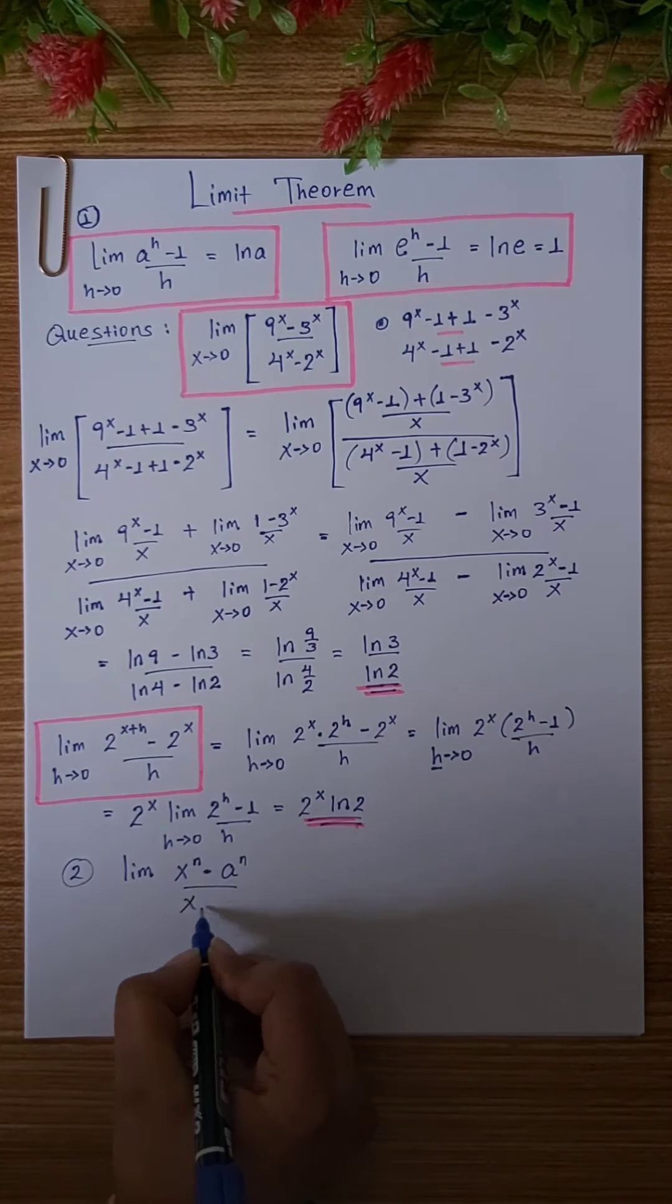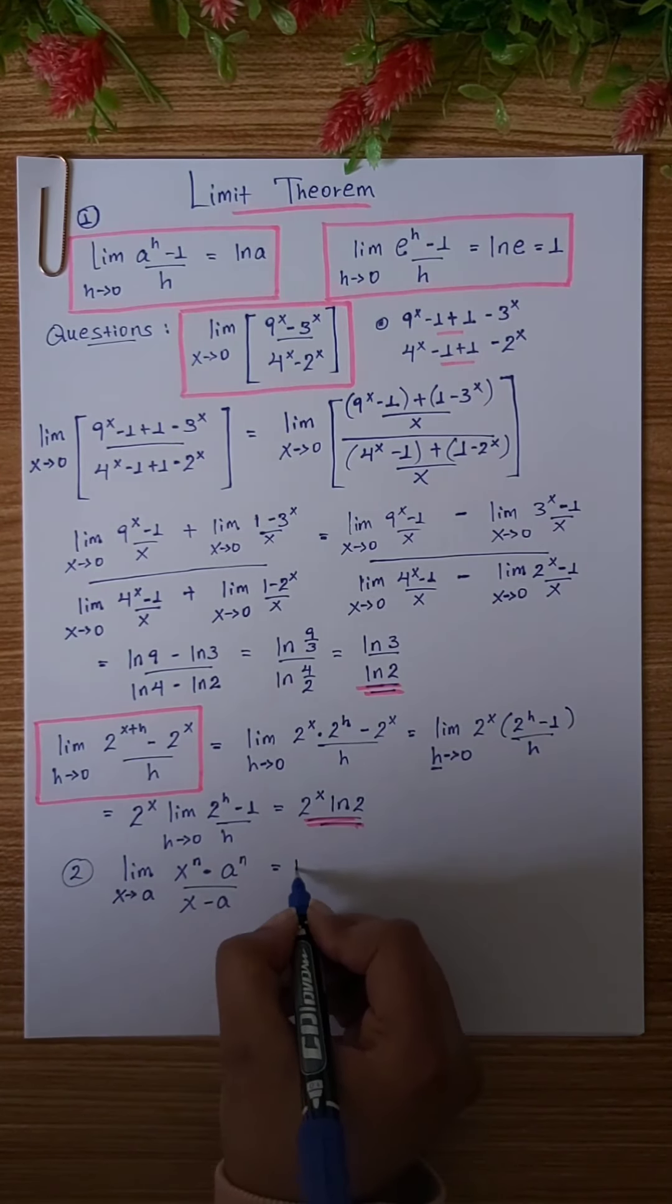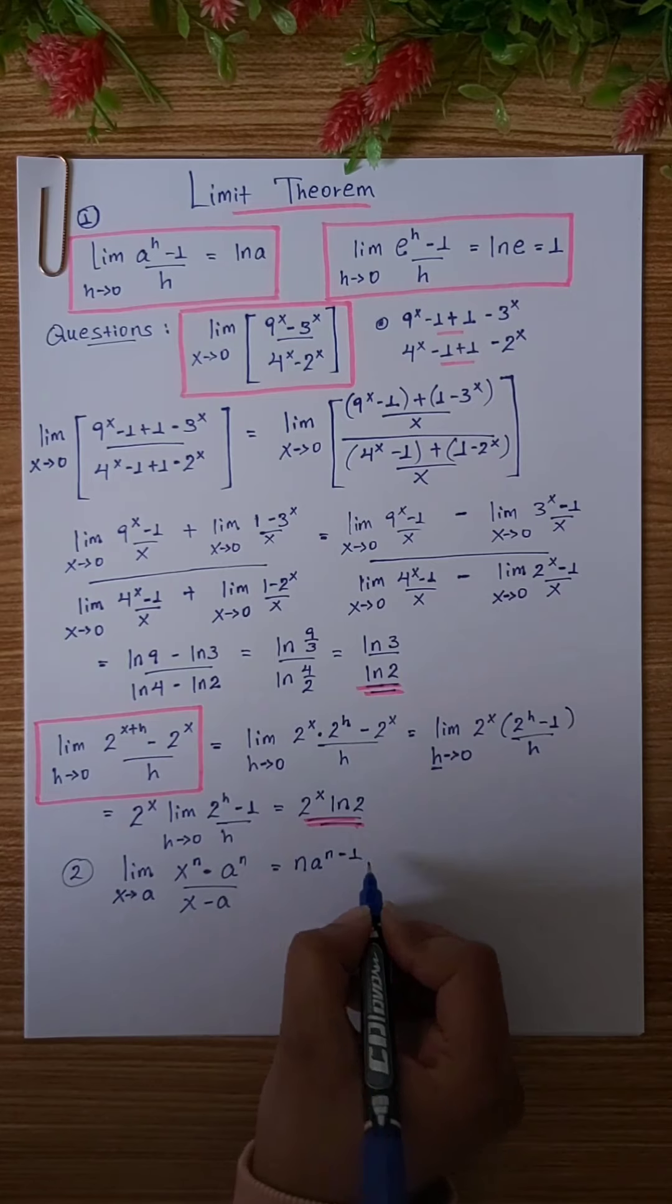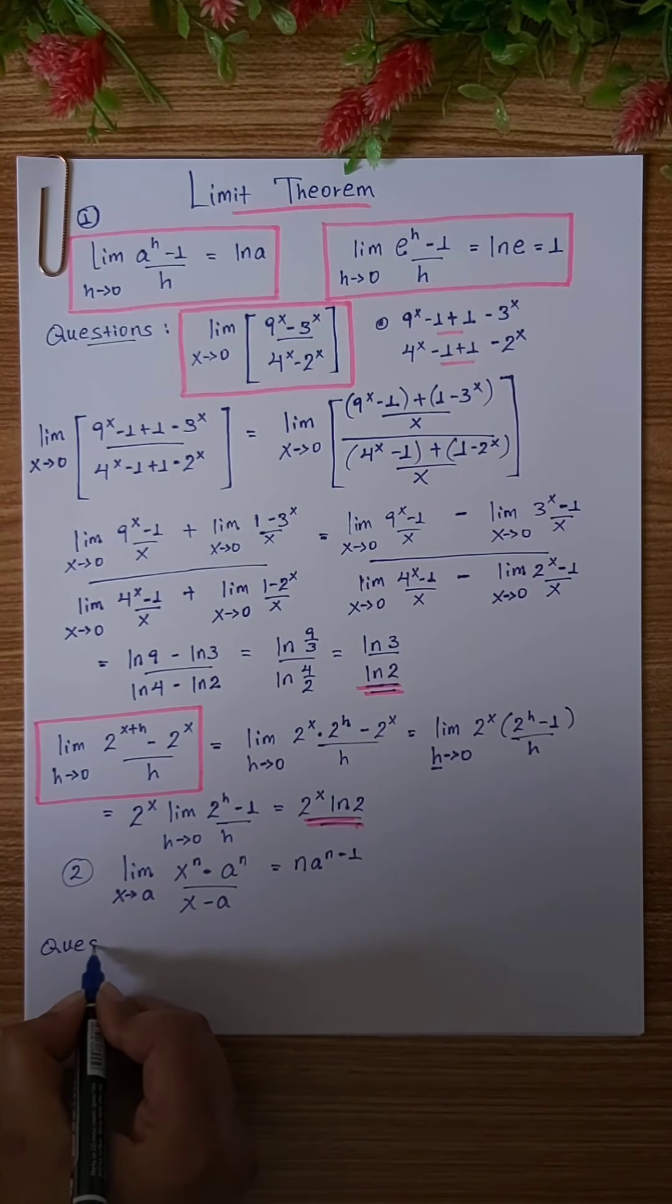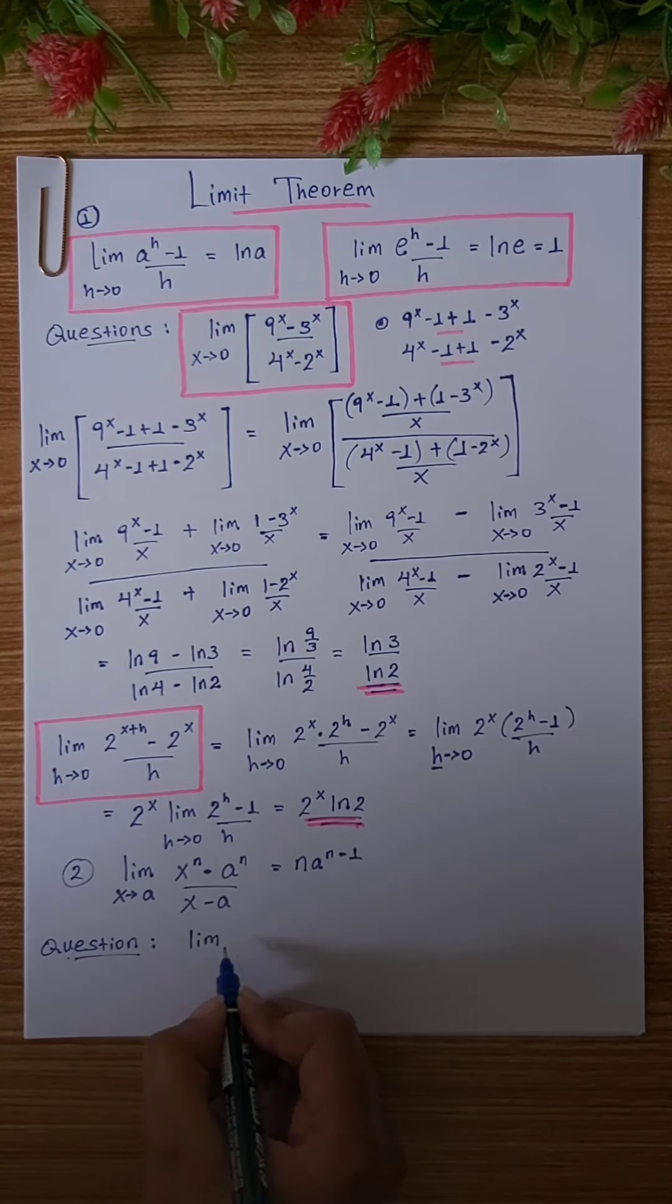Let's look at the limit of x to the power of n minus a to the power of n over x minus a as x tends to a. This equals n times a to the power of n minus 1.